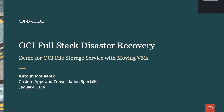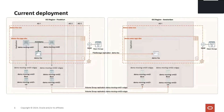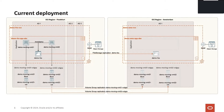I will walk you through a demo using two OCI regions — Frankfurt as primary and Amsterdam as the standby region. The architecture consists of two VMs deployed in Frankfurt, sharing one file storage mounted on /mnt/demo on both VMs. Cross-region replication for the file storage in Frankfurt is used to synchronize the data to a target file storage in Amsterdam.